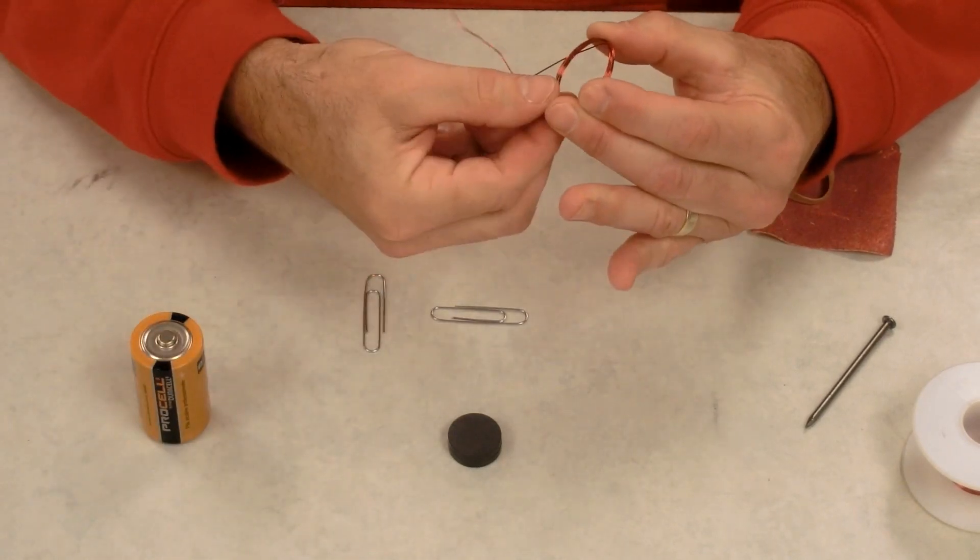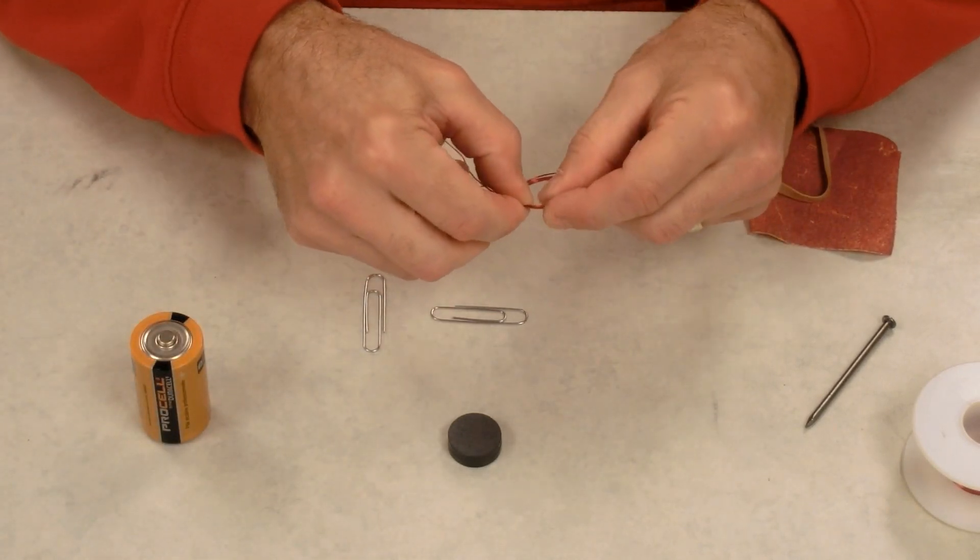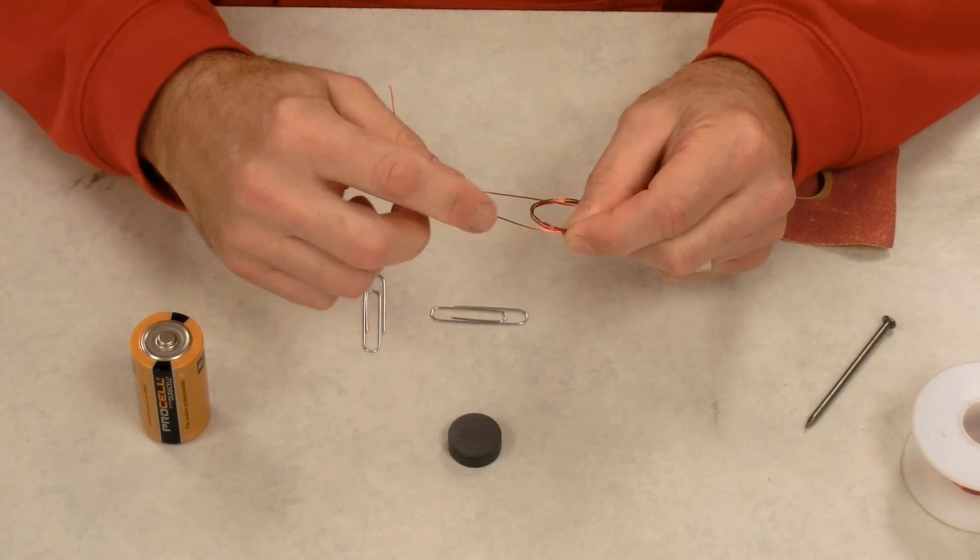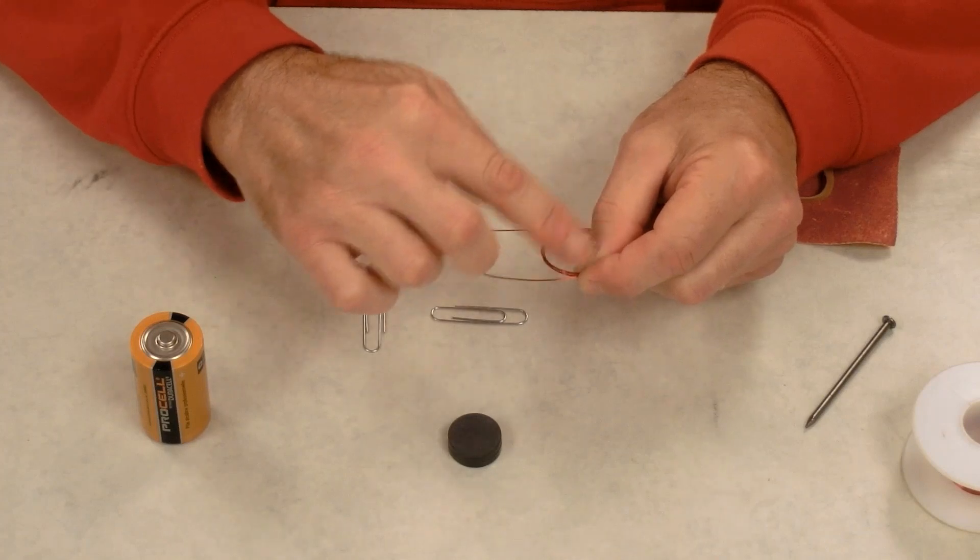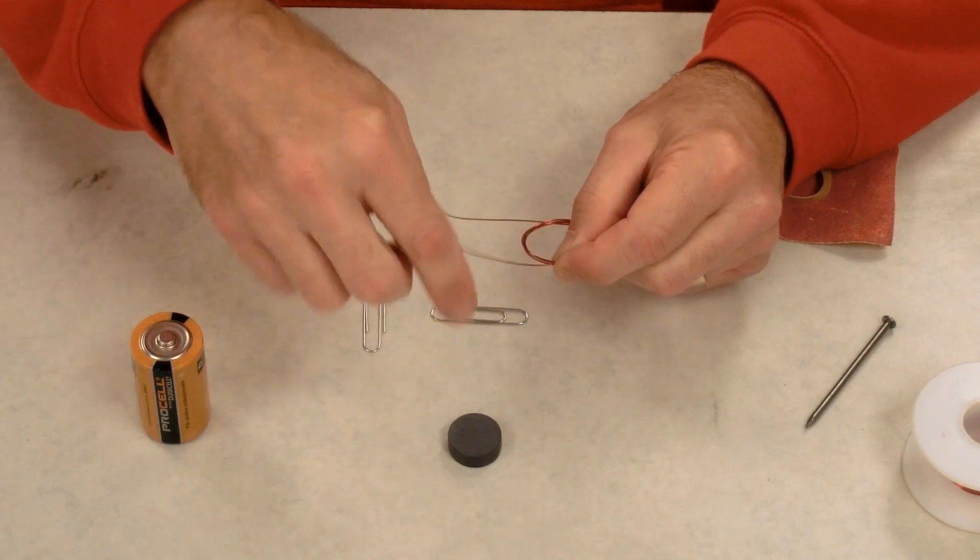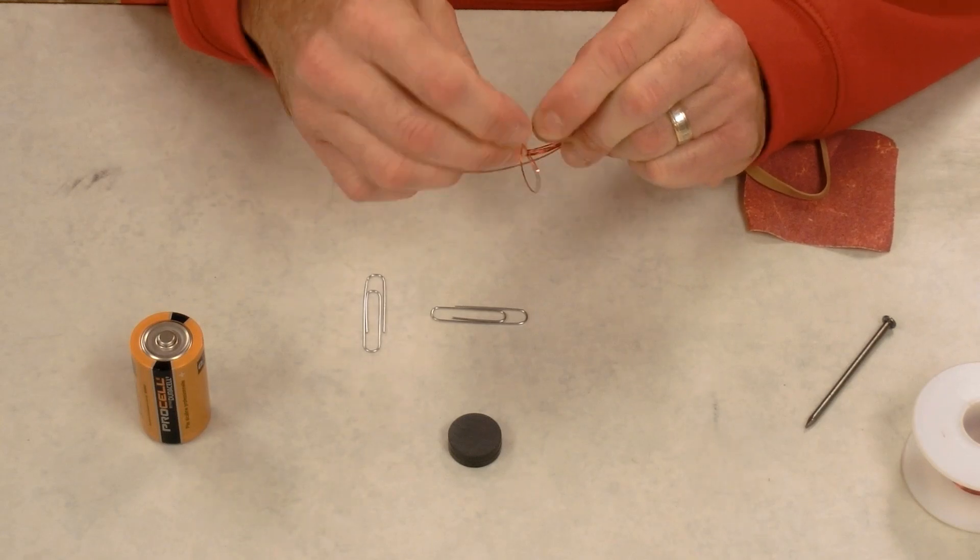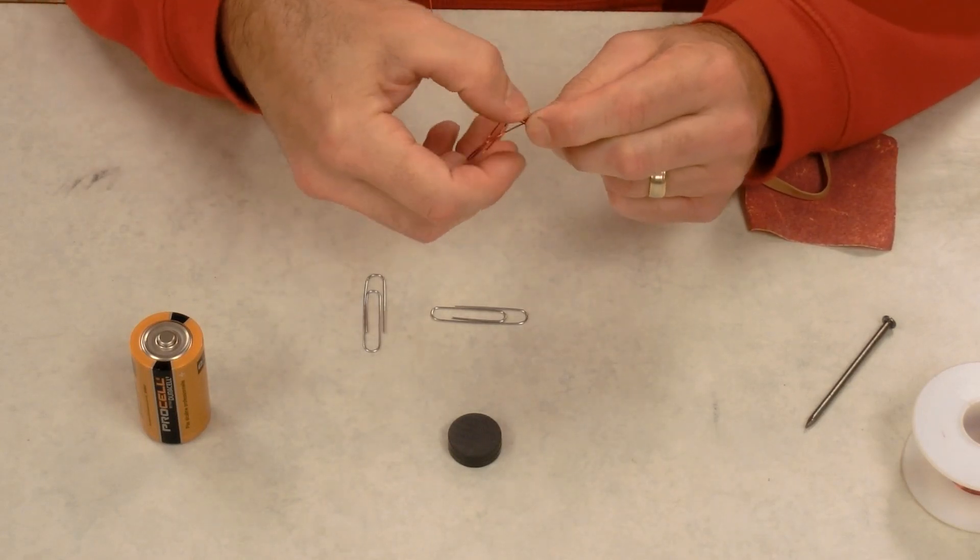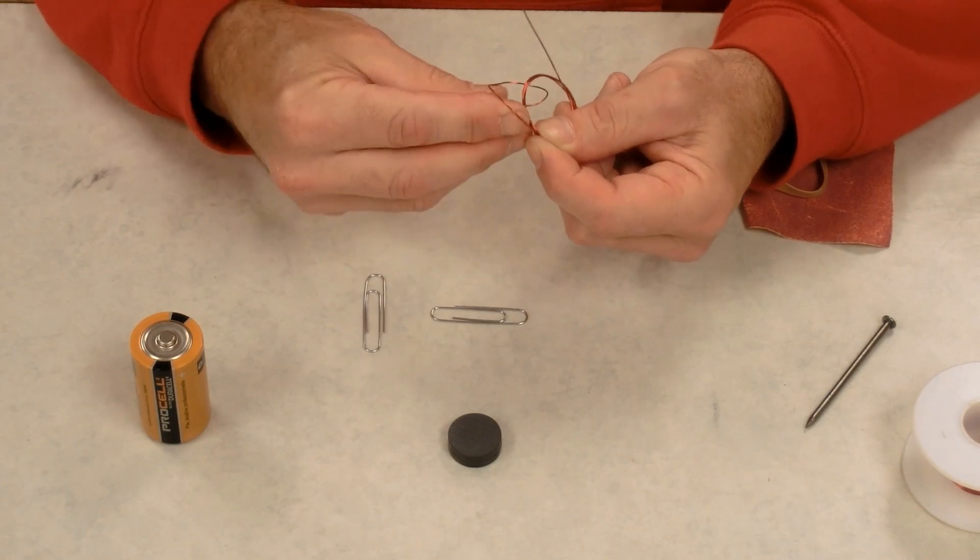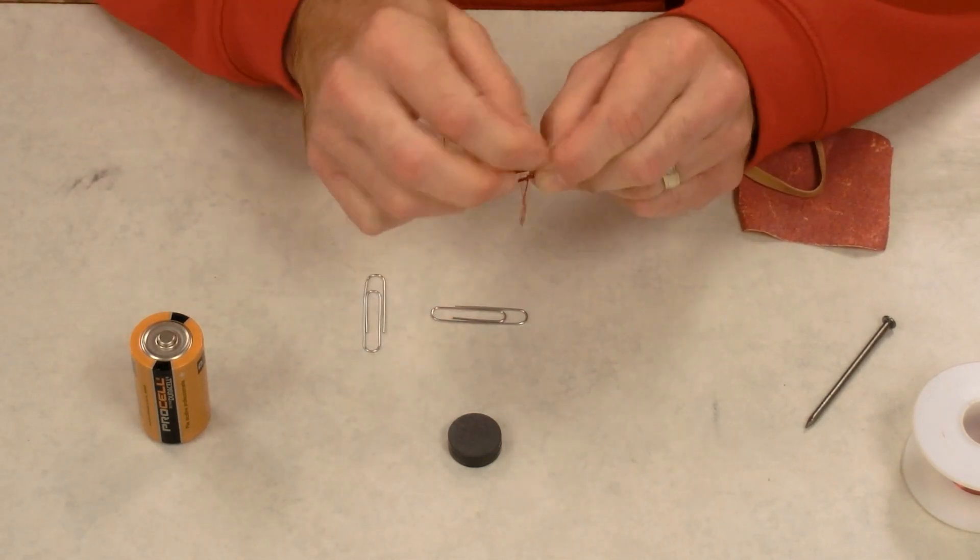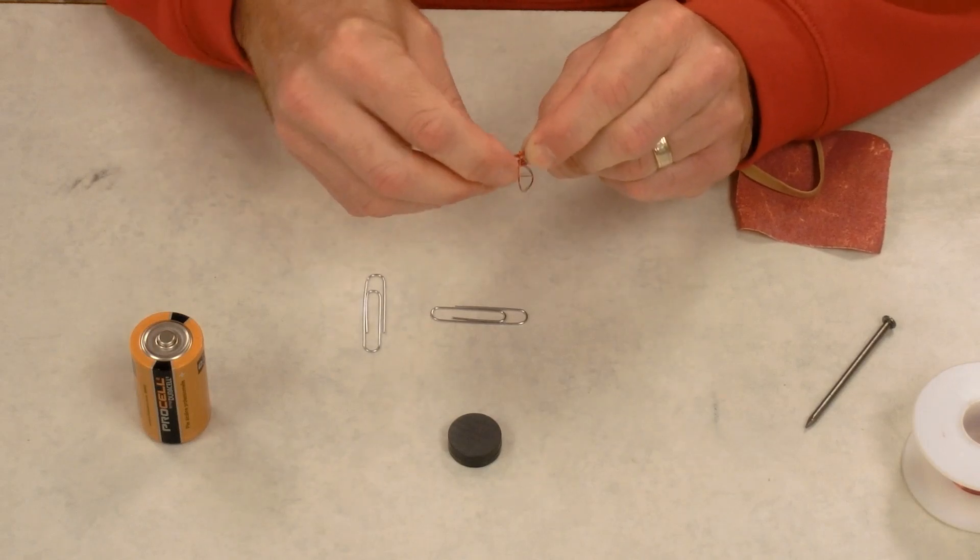So I gently slide it off the D cell, and now this part is very tricky. I have to tie it off. Now some people will just wrap it around a bunch of times and pull it off. I like to just tie a granny knot. The wire is flexible enough where you can tie it like you're tying a knot in a shoelace. So I pull it through once and then I'm going to pull it through again to keep it from slipping.